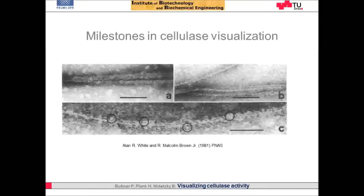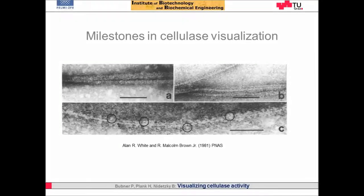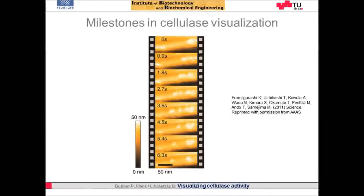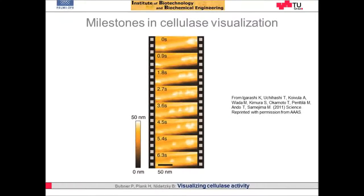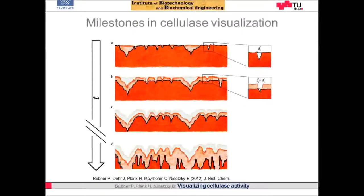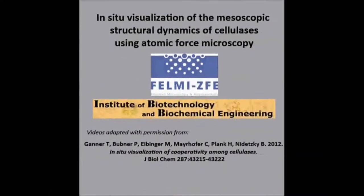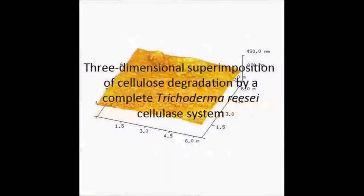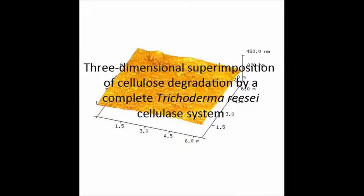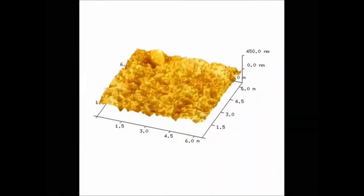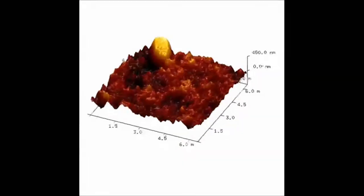We show here some of the milestones in cellulase visualization discussed in our review, such as the first TEM study on this matter by White and Brown in 1981, the visualization of CBH1 processivity using high-speed AFM in 2011, the empirical model of cellulose surface structural dynamics during enzymatic degradation published in 2012, and the in-situ visualization of the mesoscopic structural dynamics of cellulases using AFM. Here you see the three-dimensional superimposition of AFM images depicting the degradation of a mixed amorphous crystalline cellulose by a complete cellulase system of Trichoderma reesei.